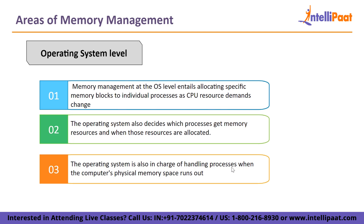Swapping is a memory management technique in which the operating system temporarily moves a process from main memory to secondary storage so that the memory can be used by other processes. At the appropriate time, the operating system will swap the original process back into memory. When the computer's physical memory space runs out, the operating system switches to virtual memory — a type of pseudo memory allocated from a storage drive configured to emulate the computer's main memory. If the demand for memory exceeds the capacity of physical memory, the operating system can automatically allocate virtual memory to a process as it would to physical memory.